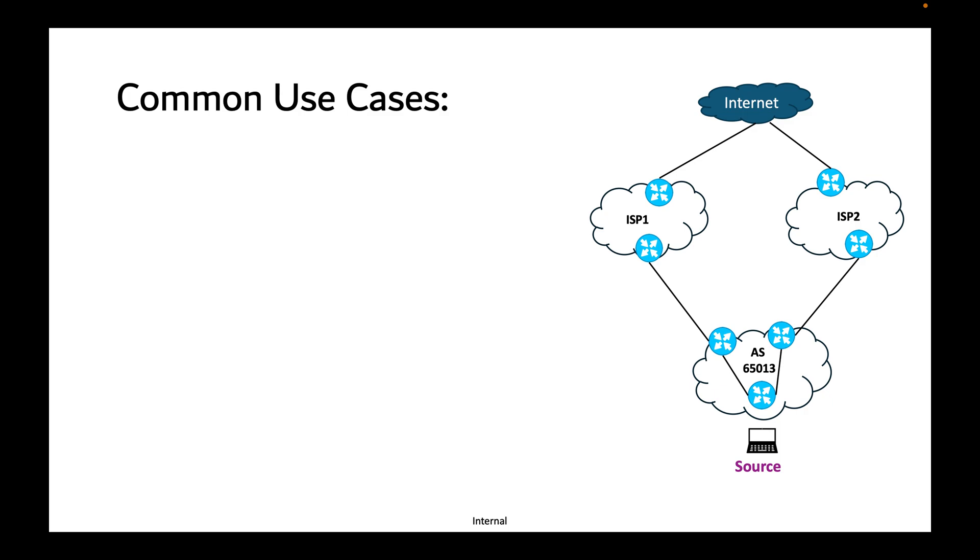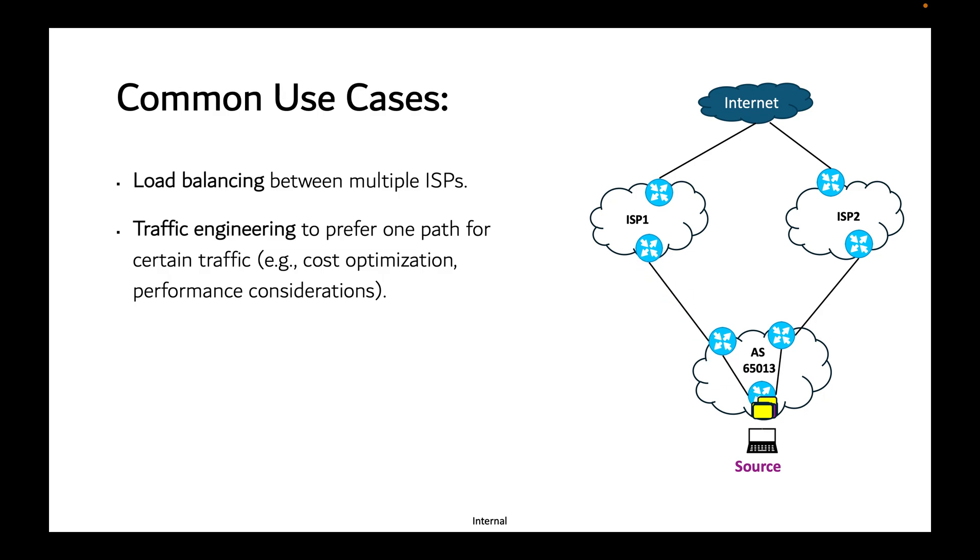Let's look at some use cases of local preference. It can be used for load balancing between multiple ISPs. It can also be used for traffic engineering to prefer one path for certain traffic and another path for other traffic, to optimize cost or performance. Some traffic might require a certain ISP, and you can use local preference for that.